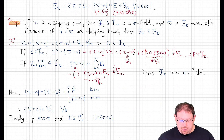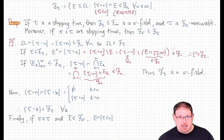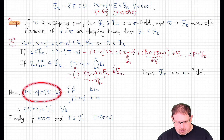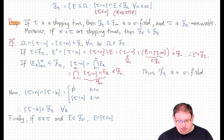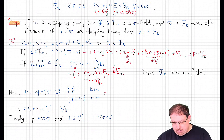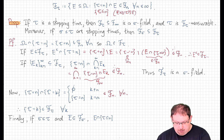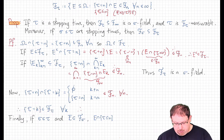Now we'd like to show that tau is measurable with respect to this sigma field. Since tau is a discrete random variable, it suffices to show that the event tau equals k is in F_tau for every k. We check: the intersection of {tau=k} with {tau=n} is either the empty set if k ≠ n, or the event tau equals n if k equals n. Either way, this is always in F_n for every n. So by definition, the event that tau equals k is in F_tau for every k, and therefore tau is F_tau measurable.